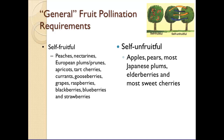On the other hand, if you have a type that is self-unfruitful, you're going to need at least two different cultivars. For example, a Gala apple by itself is not self-fruitful, so a second cultivar needs to be planted for cross-pollination. Most apples, most pears, most Japanese plums, elderberries, and most sweet cherries are self-unfruitful. When I say 'most,' that implies there are exceptions to every rule.